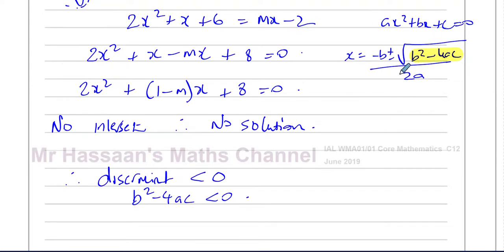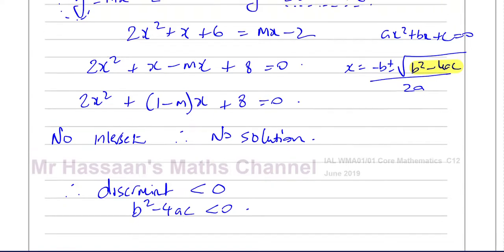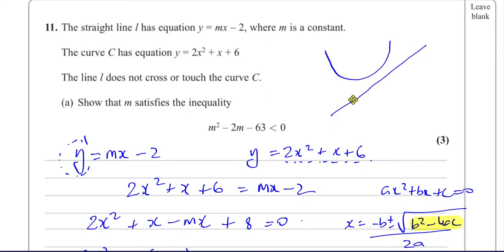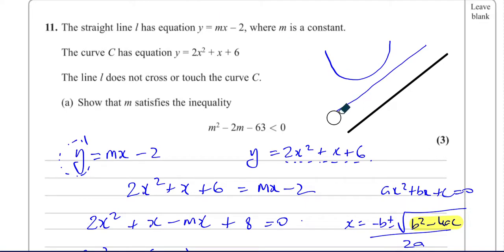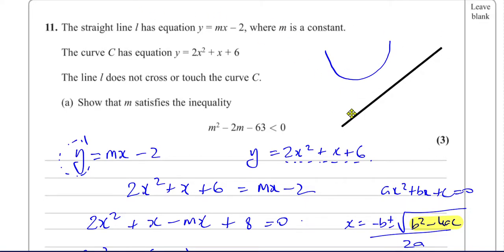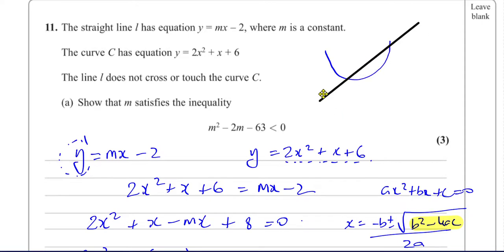If B squared minus 4AC equals 0, the square root part disappears and you get X equals minus B over 2A — one answer only. That means the line is a tangent to the curve, touching at just one point. If B squared minus 4AC is less than 0, the line doesn't touch the curve at all. And if B squared minus 4AC is positive, the line cuts the curve in two distinct places, giving two separate solutions.